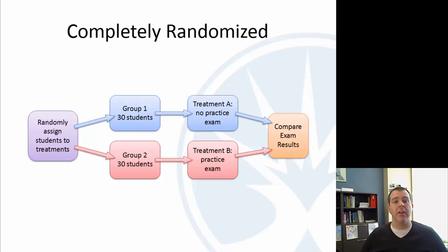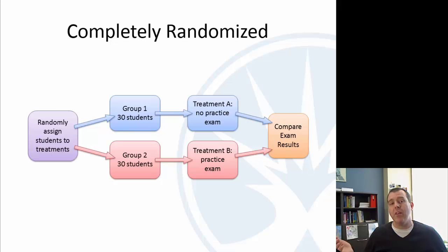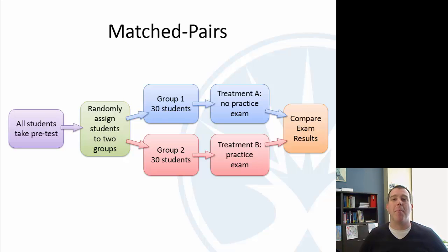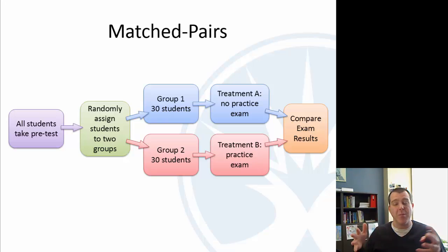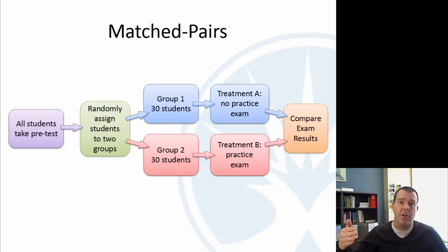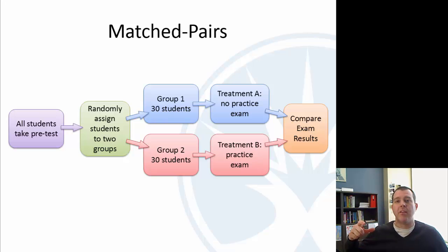One way you could correct for this is — because even within a random sample of 30 they might not be evenly distributed — you could do a pre-test and a post-test. This is called matched pairs. You have all the students take a pre-test, then split them up, and when you compare exam results, you look at the pre and post and ask: which students grew the most? Was it the ones who had the practice exams or the ones who didn't? So you've got a matched pair where you're pairing a before and after.